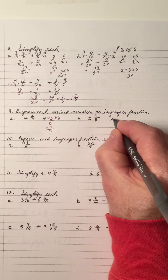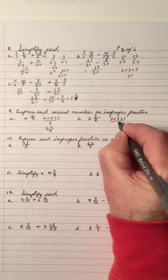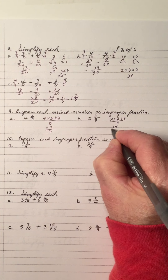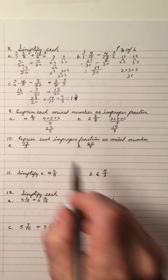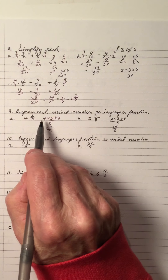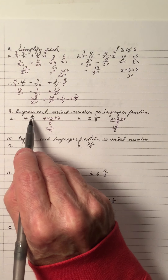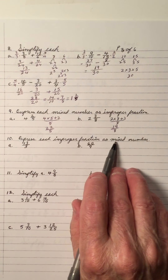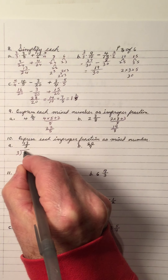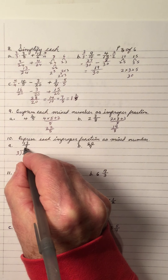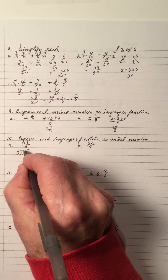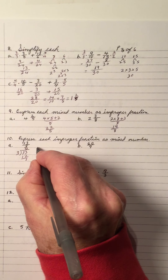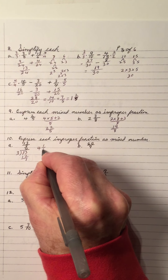2 and 3 eighths: 2 times 8 plus 3 over 8 — 16 and 3 is 19, so 19 over 8 as an improper fraction. You don't have to write all the working — just say 4 times 5 is 20 plus 2, write 22 over 5. Express an improper fraction as a mixed number. 3 divides into 13 — 3 goes 4 times giving 12, subtract to get remainder 1. So the answer is 4 and 1 over 3.